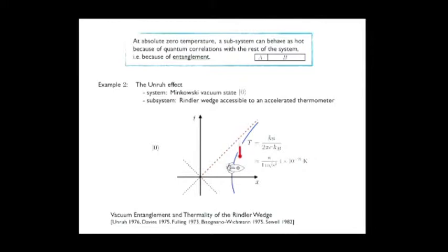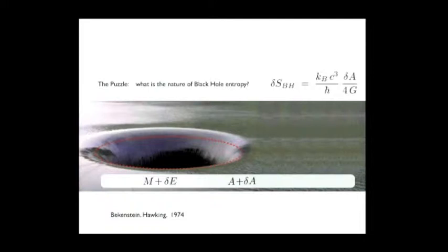The topic of this plenary session is: what is the nature of black hole entropy? As we know, as we have heard, black holes are thermal objects—they emit thermal radiation, they have thermal properties, and they have an entropy. As Bekenstein and Hawking told us, if you drop something into a black hole its mass increases, its area increases, and the entropy increases accordingly—it is proportional to the area. The question is: what is the nature of this entropy?